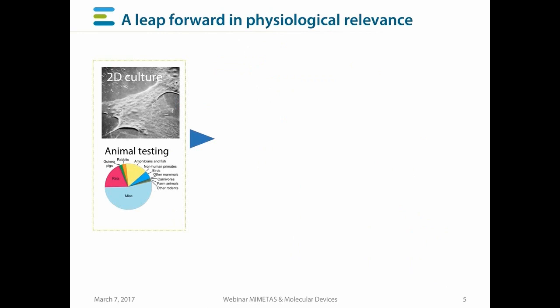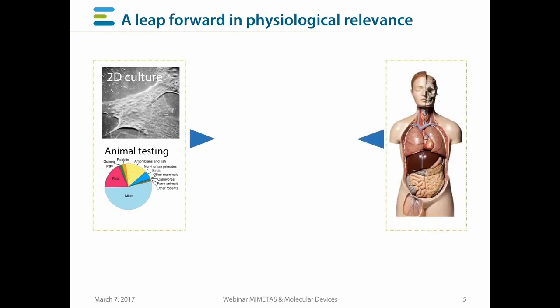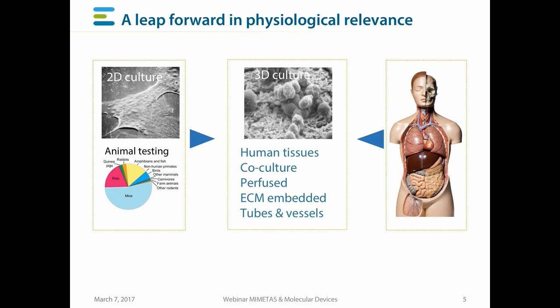2D cell culture has been around for over a century and has taught us a lot about cellular physiology. Animal testing is applied a lot in drug development. Unfortunately, both technologies are not very predictive towards people — they don't predict whether a drug is going to work in humans. What we need is a model in the middle that encompasses 3D cell culture, uses human cells and tissues that are co-cultured, allowing the cells to interact and to create organ and tissue functions.